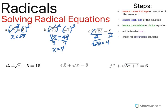Now that the radical sign is isolated, we're going to square each side. The radical sign and the squared cancel each other out, so I'm left with 2b is equal to four times four, which is 16. Then we divide both sides by two to finish solving the equation for b. So my answer for this one is eight.